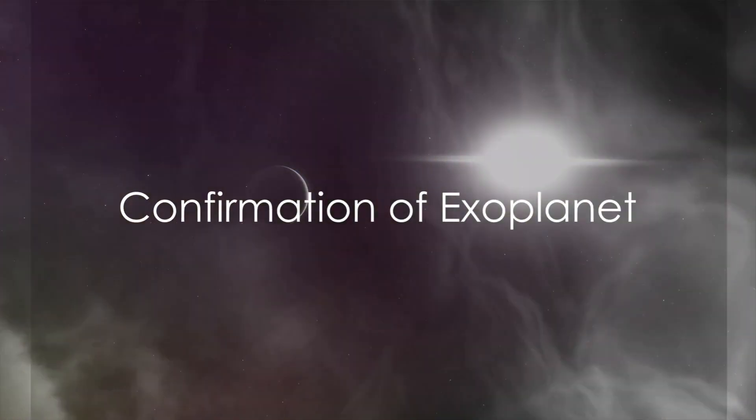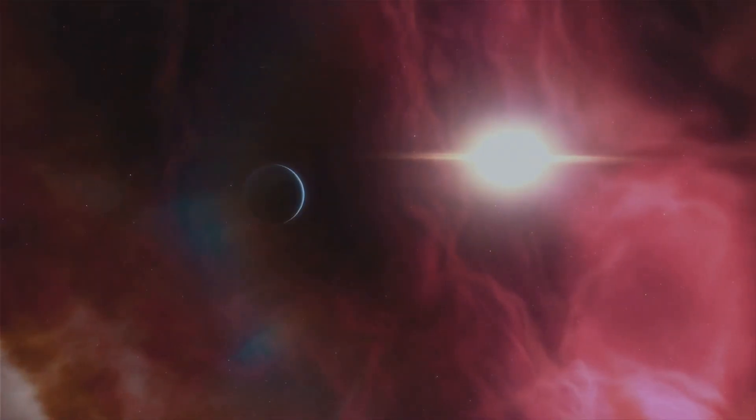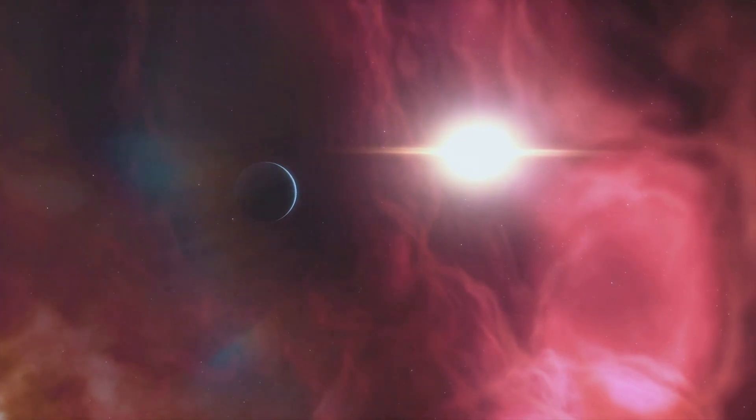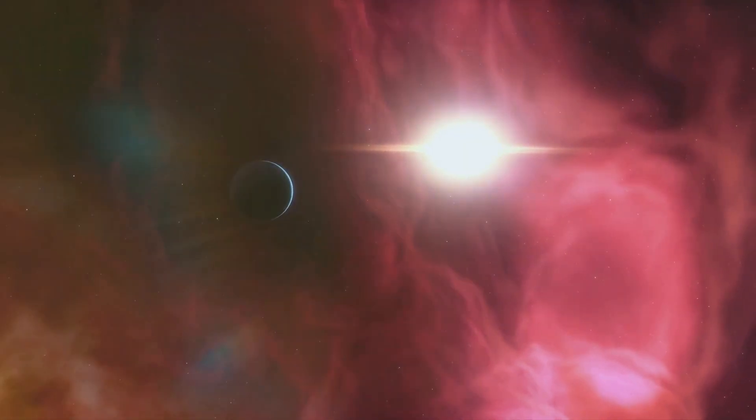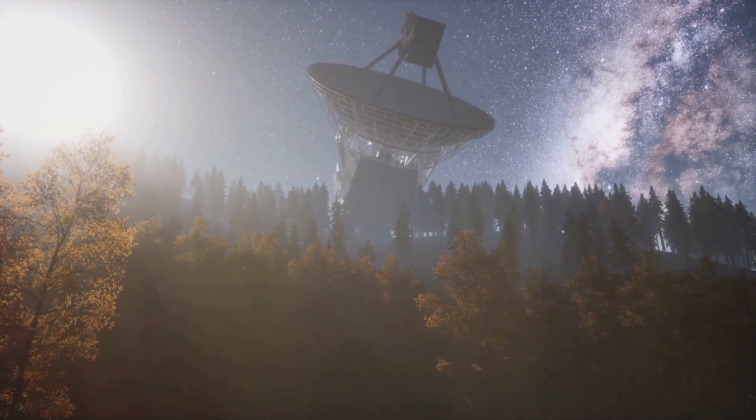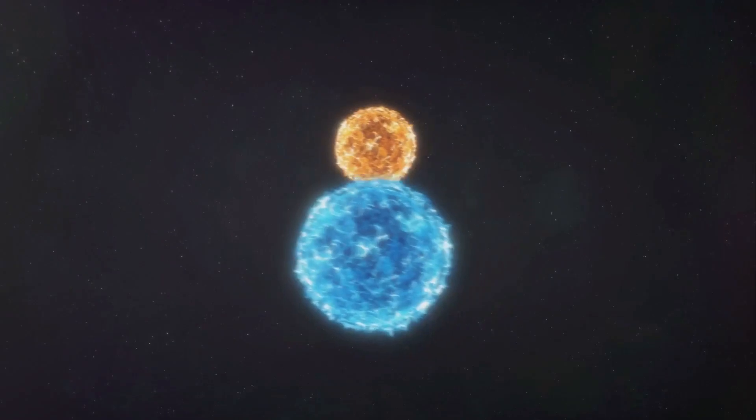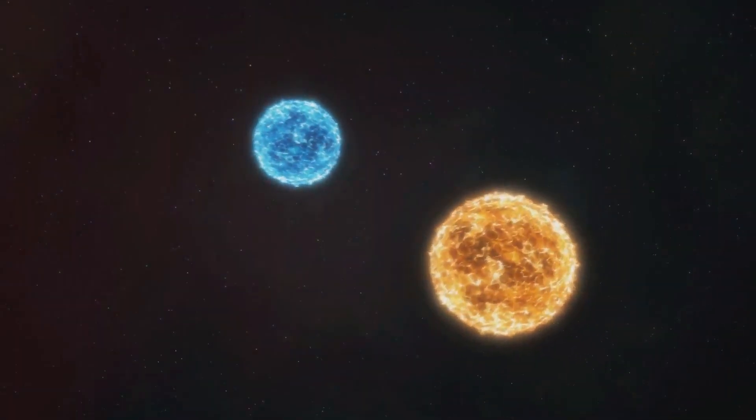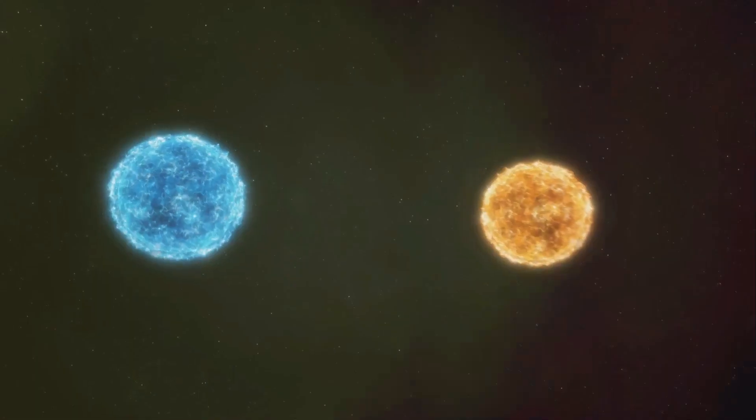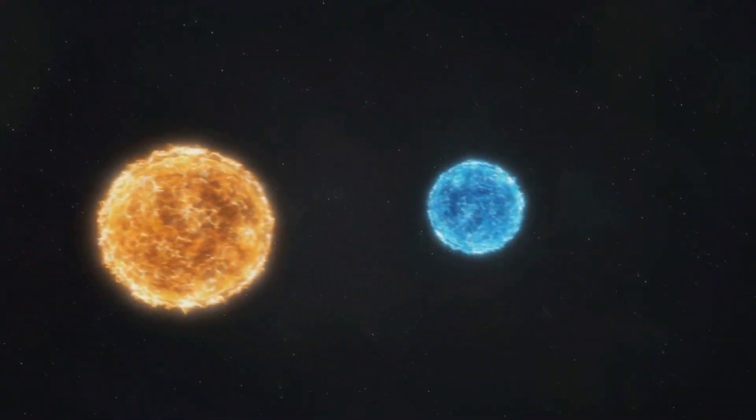In January of 2024, it confirmed the existence of an exoplanet called LHS-475b, almost the same size as Earth and located 41 light-years away. This discovery was made by observing dips in starlight as the planet passed in front of its host star. Webb's sensitivity also detected a range of molecules present, although no definitive conclusions about the planet's atmosphere have been made yet.